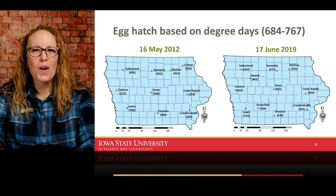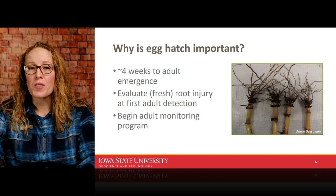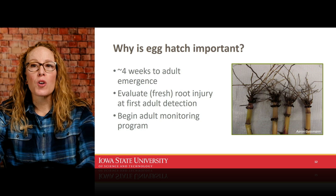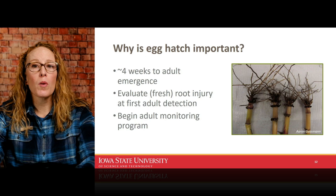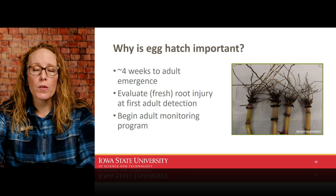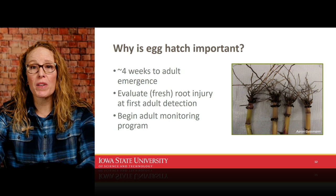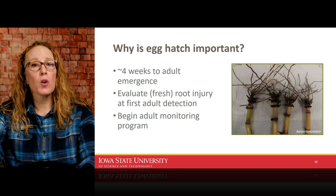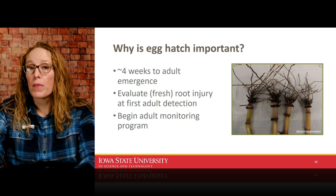Why do I care about egg hatch? Because approximately four weeks after egg hatch is when I'd first expect to see adults, and I know the larvae have finished their round of feeding. Seeing adults in the field is my cue to assess root injury. I want to look at the root system while the injury is fresh so I can see pitting, scarring, browning, or any type of discoloration, and of course the pruning of major roots. I don't want to wait until August or September because some hybrids put on a lot of regrowth or bottle-brushing, making it more difficult to assess injury accurately.